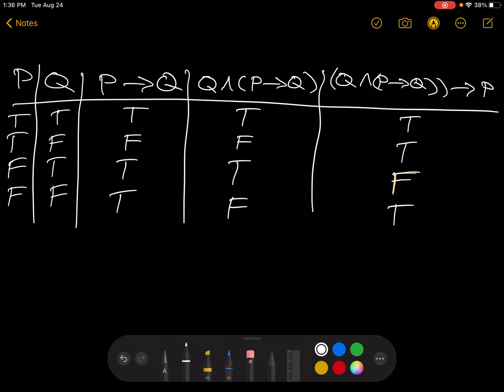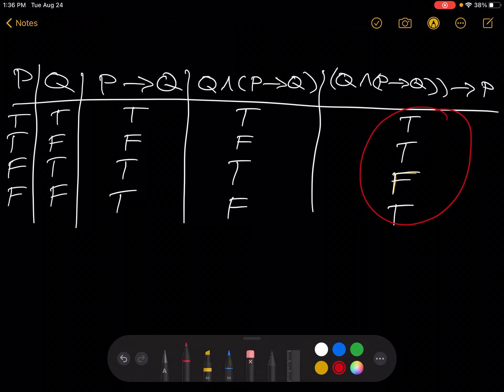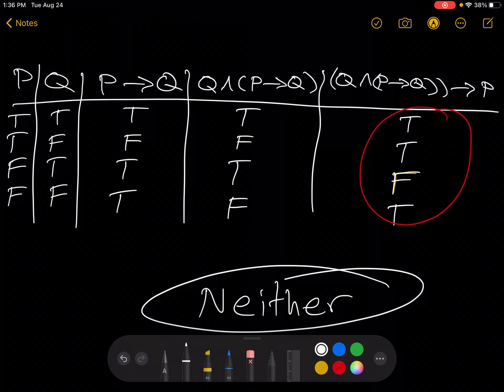All right, so if everything in this column here was true, it'd be a tautology. If everything in that column was false, then it'd be a contradiction. But it's not either way. It's neither a tautology nor a contradiction. So, therefore, we have neither. The answer is neither.